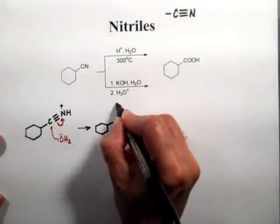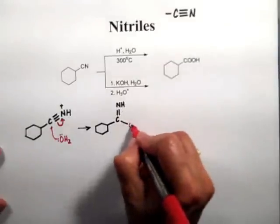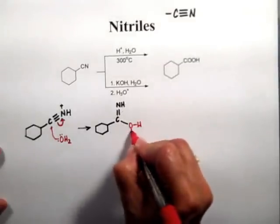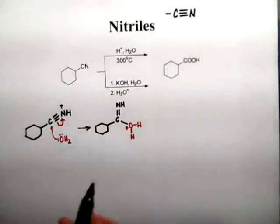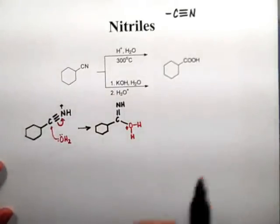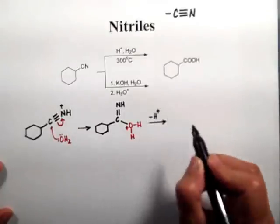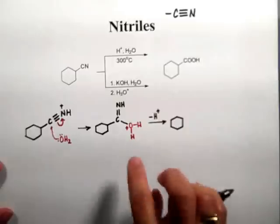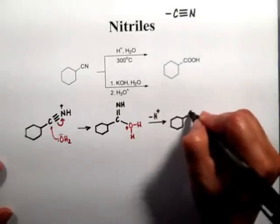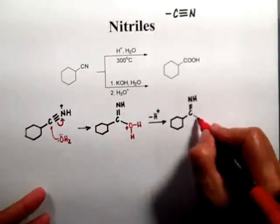Now I have a double bond between the carbon and the nitrogen, and I attacked with a water molecule. When you attack with water or alcohols, the mechanisms seem really long because there are many protonation and deprotonation steps. So we deprotonate the oxygen — minus a proton. I have plenty of water, so water comes and grabs the proton. Now I have an OH right here.